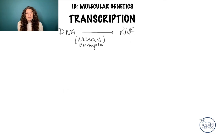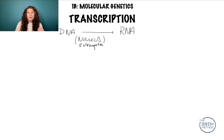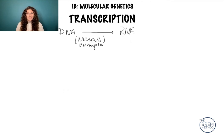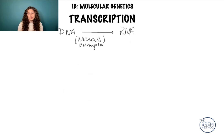Now let's talk about a topic that does tend to come up on the MCAT and is a little confusing for students — which is what each DNA strand is called and how to identify the mRNA sequence that comes from each one of them. I'm going to start by giving the definitions and then we'll work through an MCAT style example.